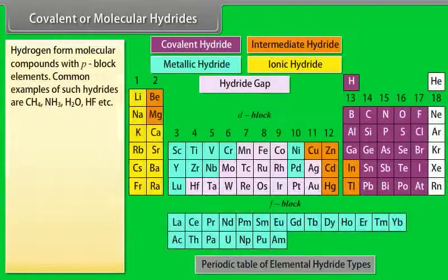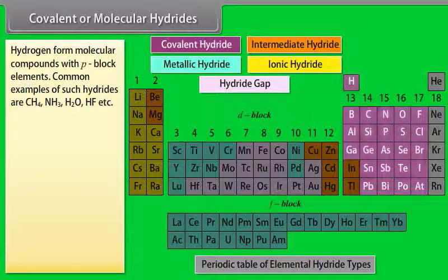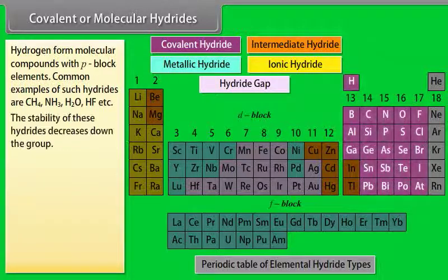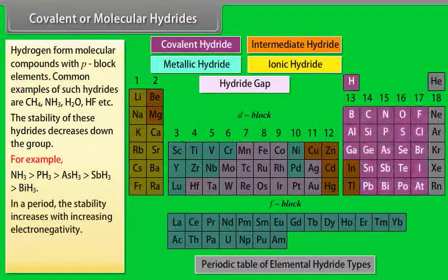Covalent or molecular hydride: hydrogen forms molecular compounds with P-block elements. Common examples of such hydrides are CH4, NH3, H2O, HF, etc. The stability of these hydrides decreases down the group. In a period, the stability increases with increasing electronegativity.